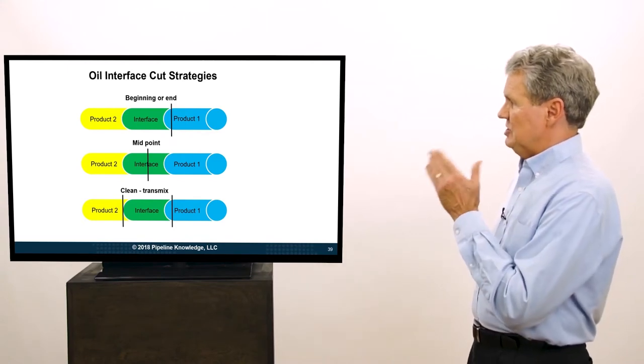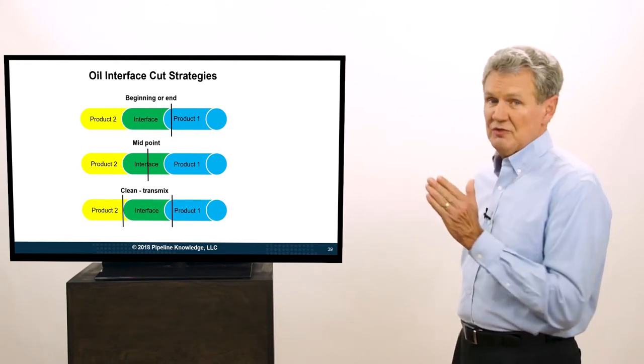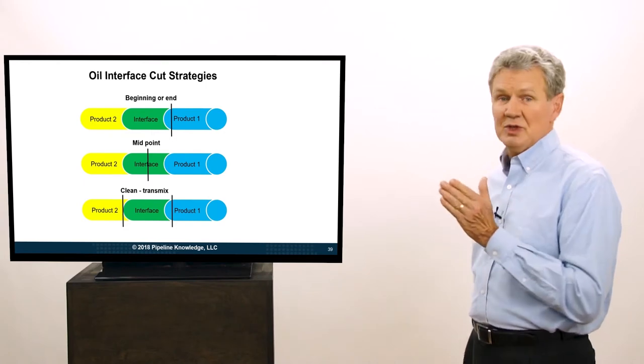So one way to do it is to cut product one clean. In other words, when the interface comes up, you start putting the interface into a transmix tank or you run it in with product two.